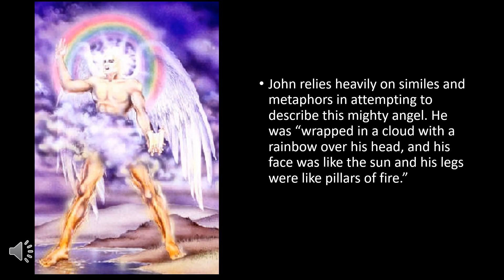John relies heavily on similes and metaphors in attempting to describe this mighty angel. He was wrapped in a cloud with a rainbow over his head, his face was like the sun, and his legs were like pillars of fire. Once again, we are reminded of Exodus, where the children of Israel were led by a cloud during the day and a pillar of fire at night. This also reminds us of the first chapter of Revelation, where John had this vision of Christ, and of the throne room with the rainbow around the one seated on the throne. This angel of a new Exodus guides the new Israel on its wilderness pilgrimage out of Egypt — or in this case Babylon the Great — to the new Jerusalem.